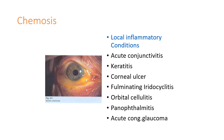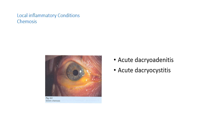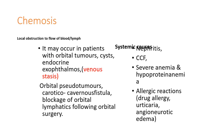In acute conjunctivitis, keratitis, and corneal ulcer, the condition can be treated. Other causes include acute dacryoadenitis, local obstruction to blood flow such as orbital tumors, cysts, endocrine exophthalmos, venous stasis, carotico-cavernous fistula, and blockage of orbital lymphatics. Systemic conditions include severe anemia, hypoproteinemia, congestive cardiac failure, drug allergy, urticaria, and angioneurotic edema.